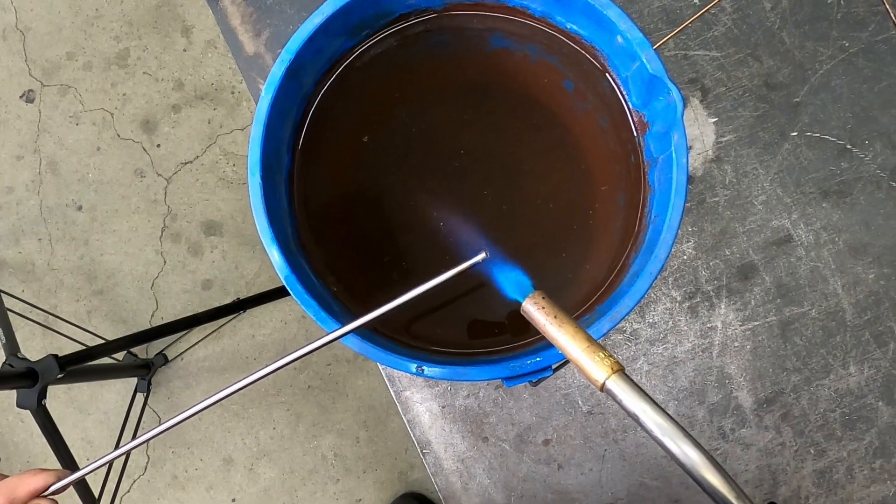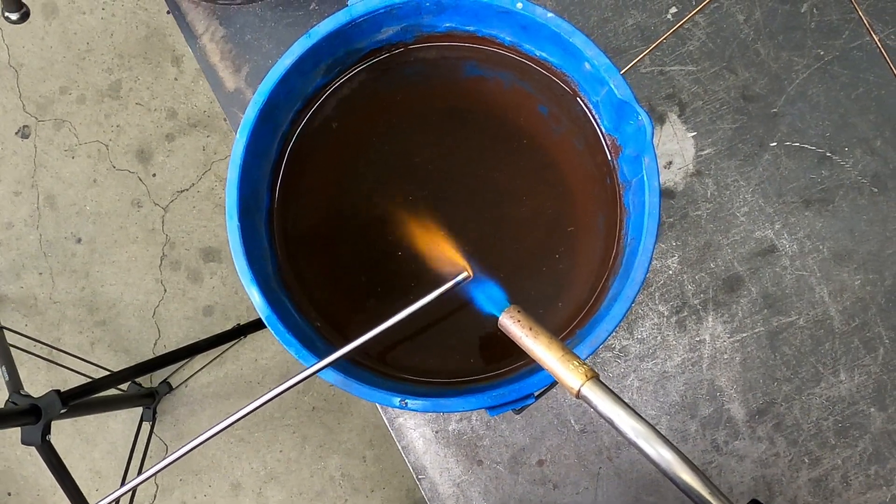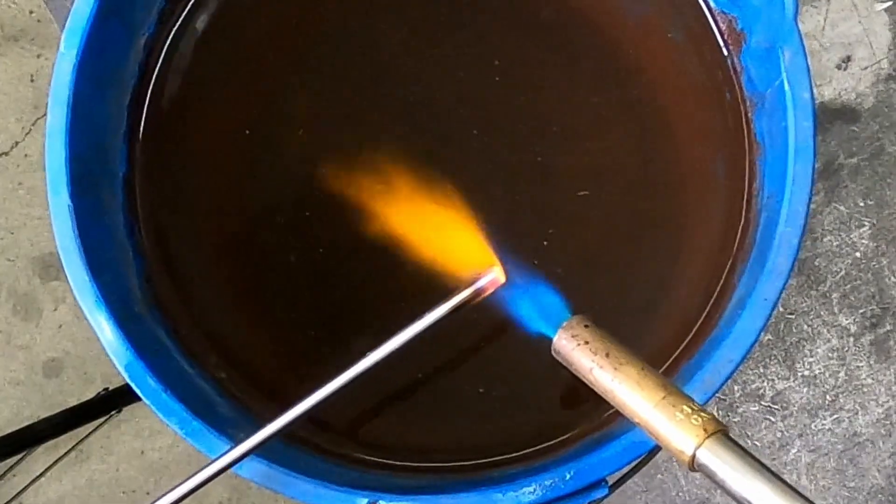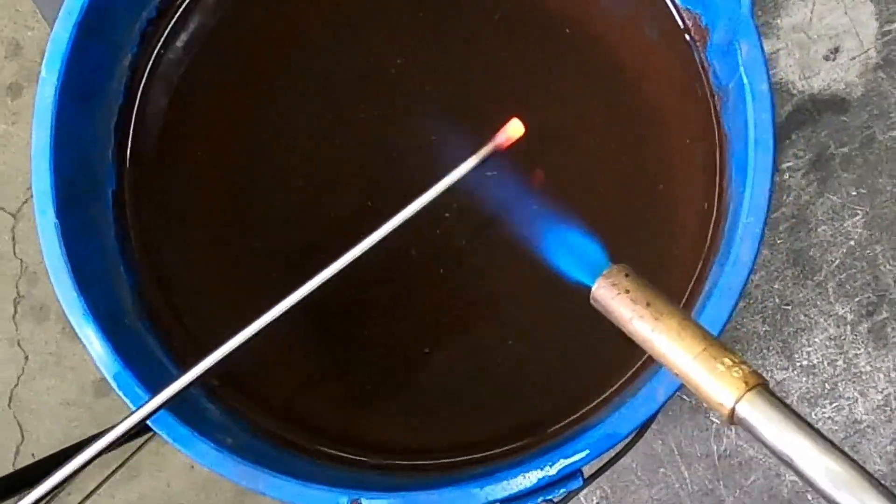Annealing the tubing to make it softer for flaring is optional. It seems to help make a better flare, especially on dash 3 tubing which is the only size I use for brakes.